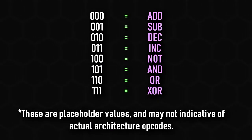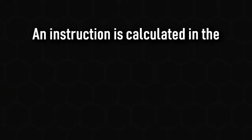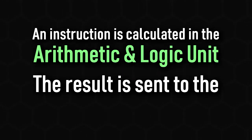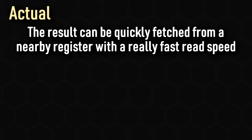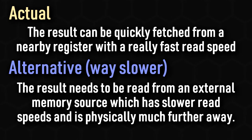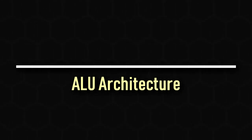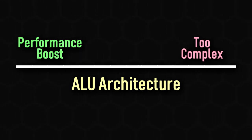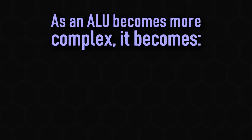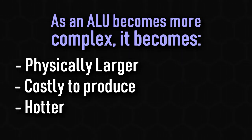Here are some examples of opcode values that may be used, including both arithmetic operations and logic gates. Once an instruction is calculated in the ALU, it is output to a register called the accumulator, which holds the result of the most recent calculation. This speeds up processing as it prevents results from having to be written to and subsequently re-read from memory. Manufacturers need to find a balance: a more complicated ALU is larger, hogging die space, being more expensive to produce, and generating more heat — none of which are desirable.